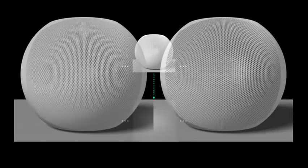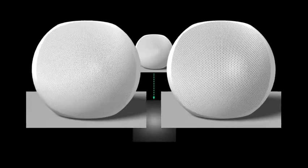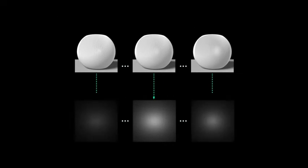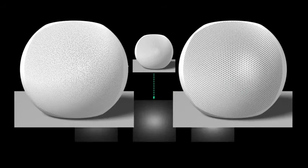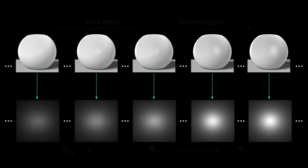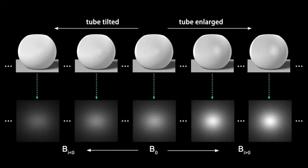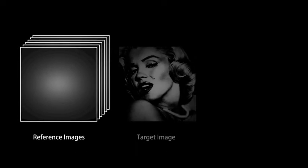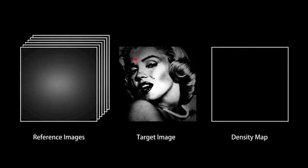We precompute and store a collection of reference images, which are formed on the wall by various uniform density tube patterns on the lampshade. Each tube is embedded inside a disk with a safety region around it to ensure printability. Given the target image, we generate the density map for the desired distribution of disks based on these reference images.